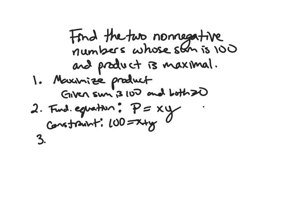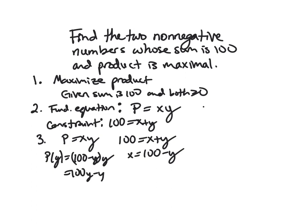So next, we do notice that P being x times y means it is in two variables. But we can use the constraint to get it down to one. So x is 100 minus y here. And so we can substitute in and just get a function purely in terms of y as 100 minus y times y or 100y minus y squared.